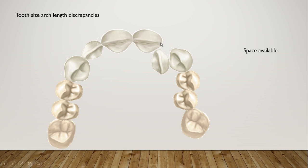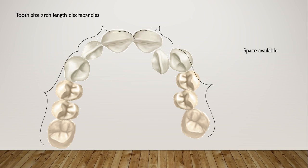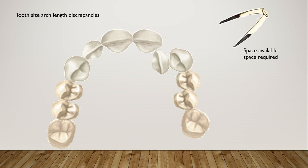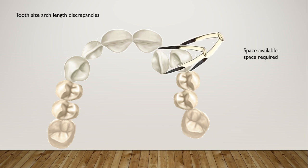For example, if you want to calculate the amount of crowding, you first measure the space available in the dental arch and how much space is required by the teeth to align. You measure each tooth individually and then subtract the space required from the space available to find out how much crowding or spacing is present in the arch. However, Bolton analysis is not related to tooth size arch length discrepancy.